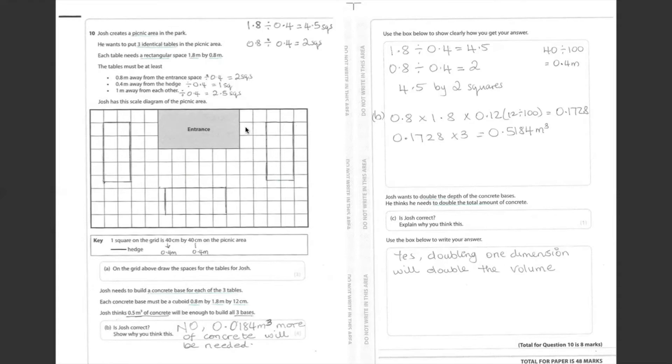One, two. One, two. One square from the hedge. One, one, one, one. And finally, 2.5 squares from each other. 2.5 squares, 2.5 squares.